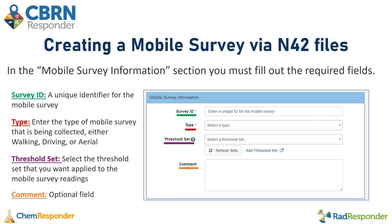The next field is the type of mobile survey being collected: walking, driving, or aerial. For example, the walking type could be a data collector walking with a backpack collecting radiological readings; the driving type could be a vehicle recording readings as it drives; and an aerial example could be a drone collecting information while airborne. In this webinar I will be using the example of a drone flight path. The next field is the threshold set — a drop-down menu where you select the threshold set to apply to the mobile survey readings, which determines the severity of the segments and colorizes them accordingly. The final field in this section is the optional comment field for any additional information.